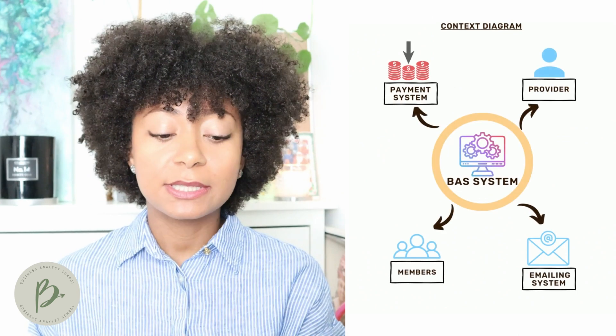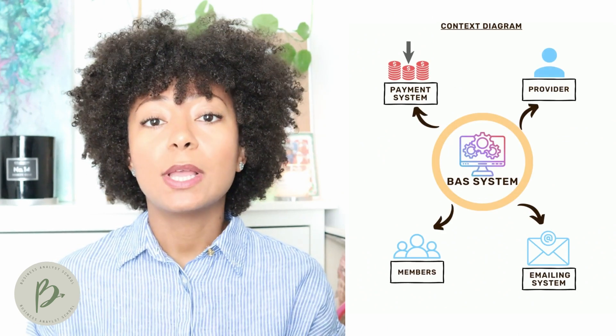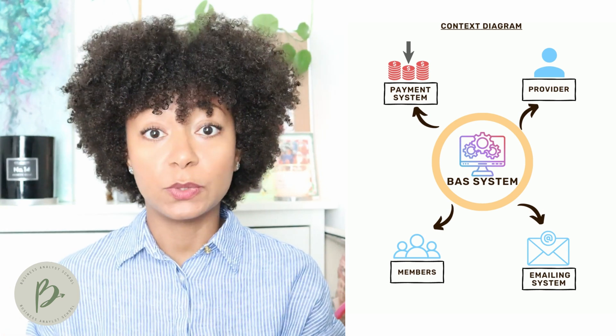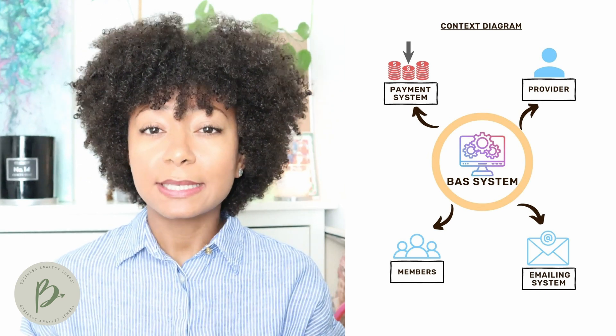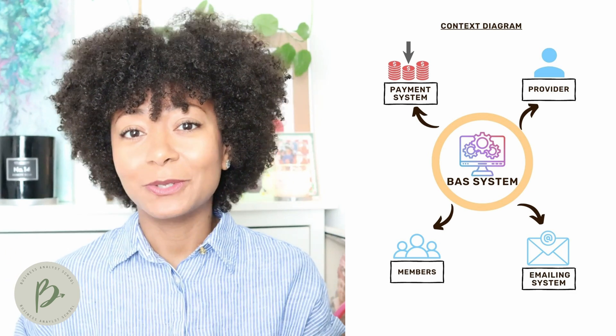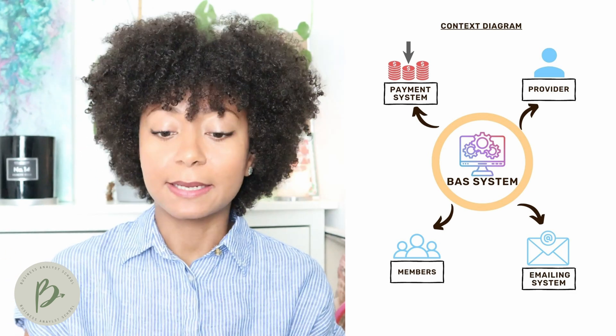Before you create a use case diagram, it's best to create a context diagram, which is a higher-level representation of the interaction between the actors and the system, without necessarily highlighting what the actors are doing within that system. The context diagram is what we then develop into the use case diagram. It has the system represented within a circle and highlights the various actors using the system, and can also show other systems as actors interacting with the main system.